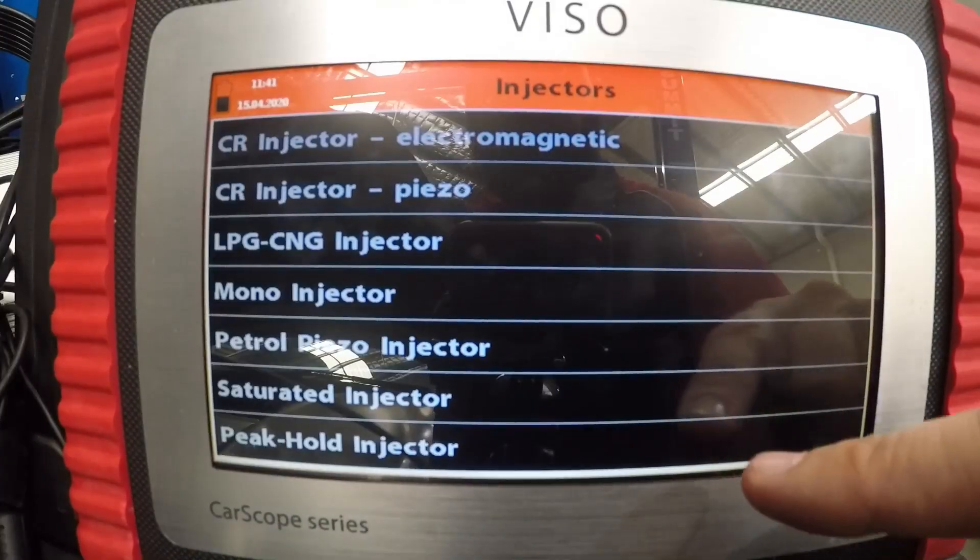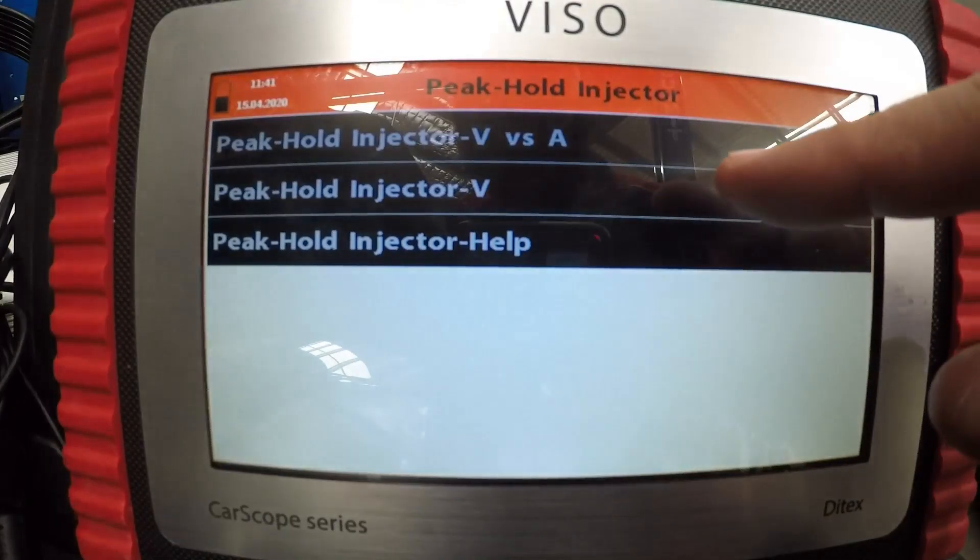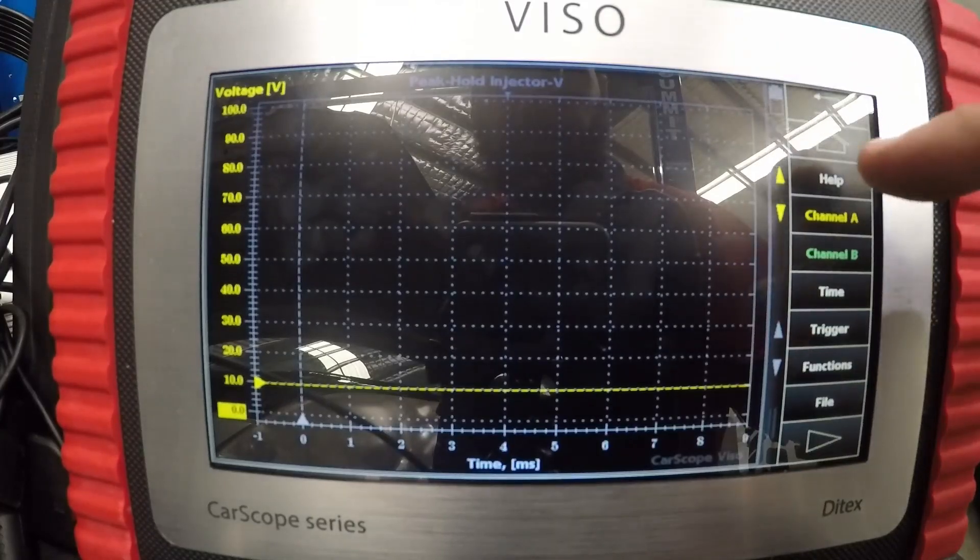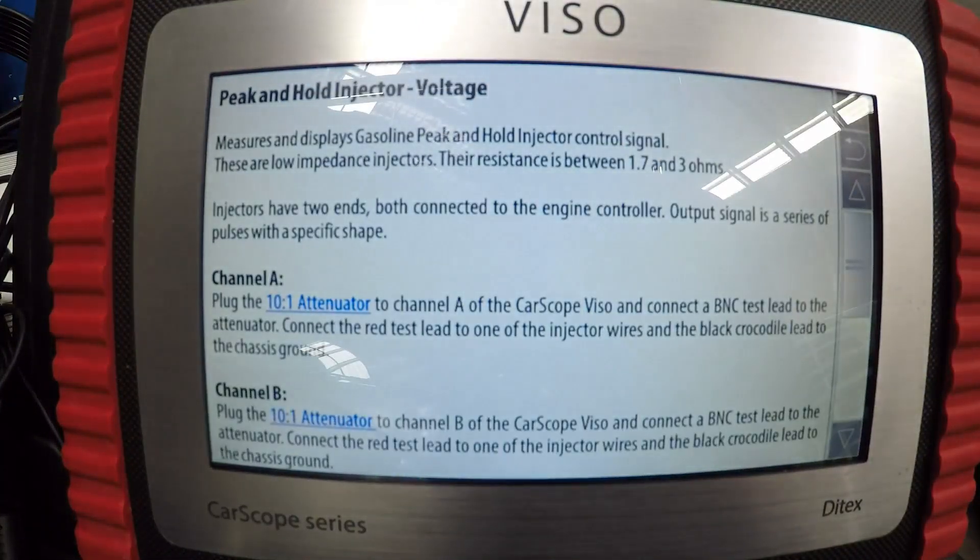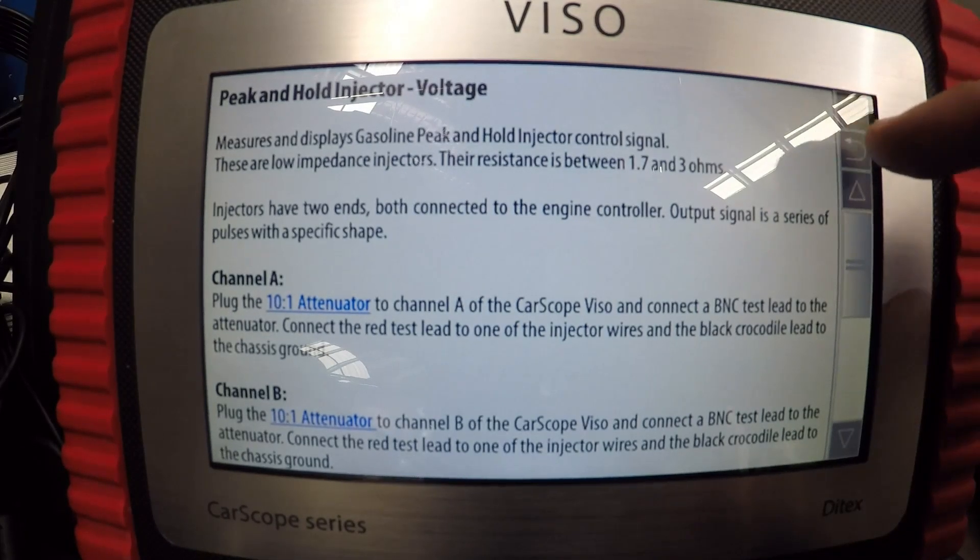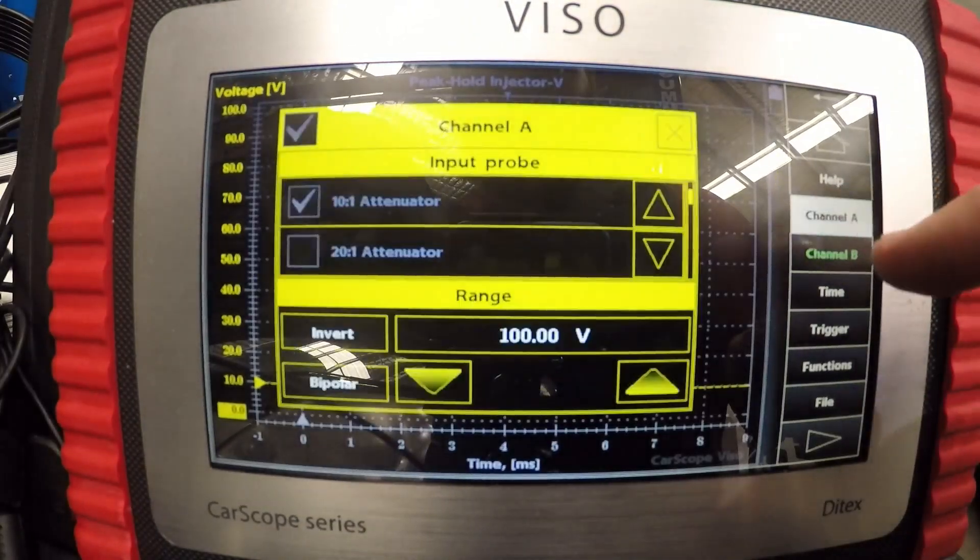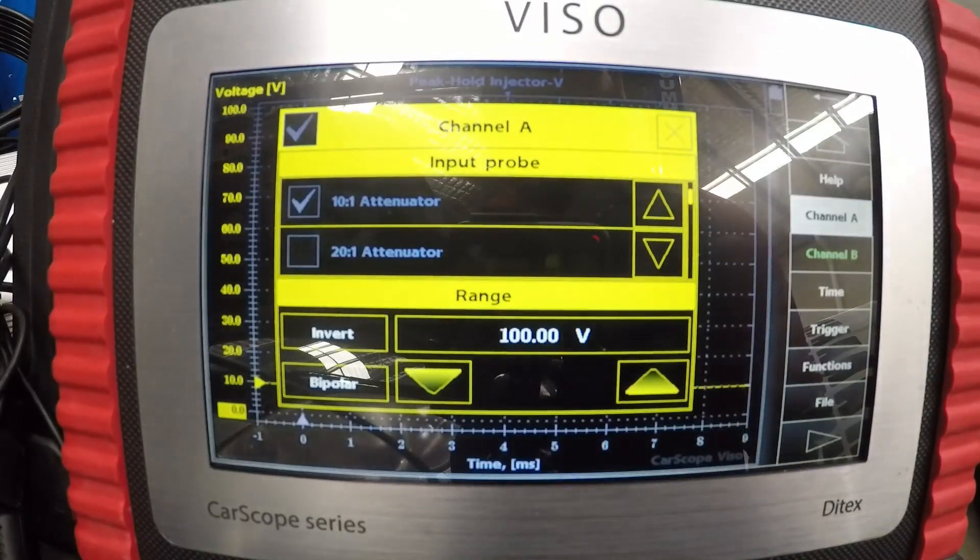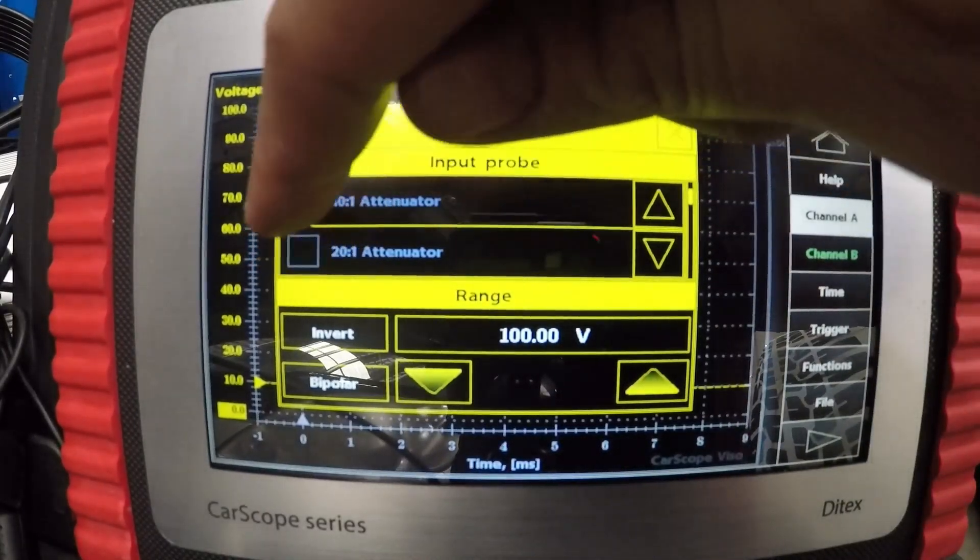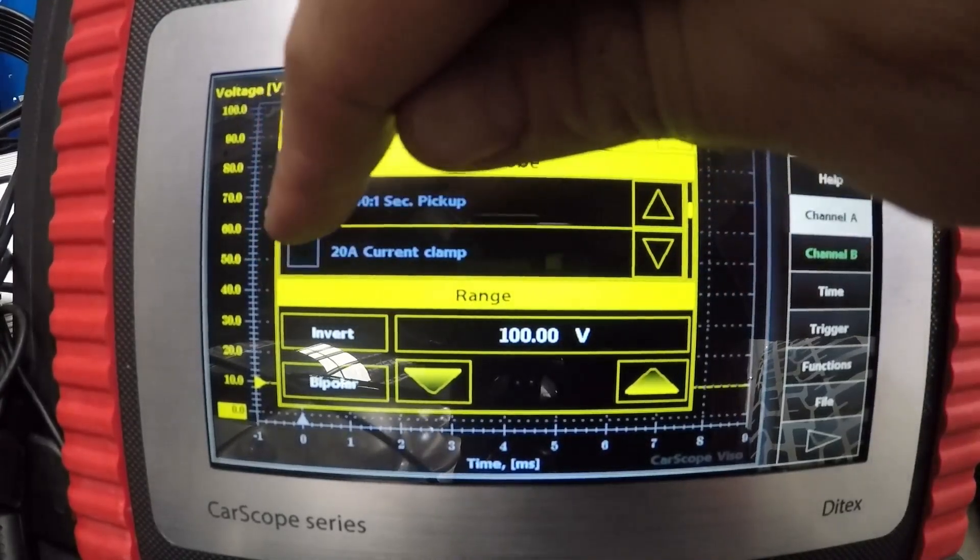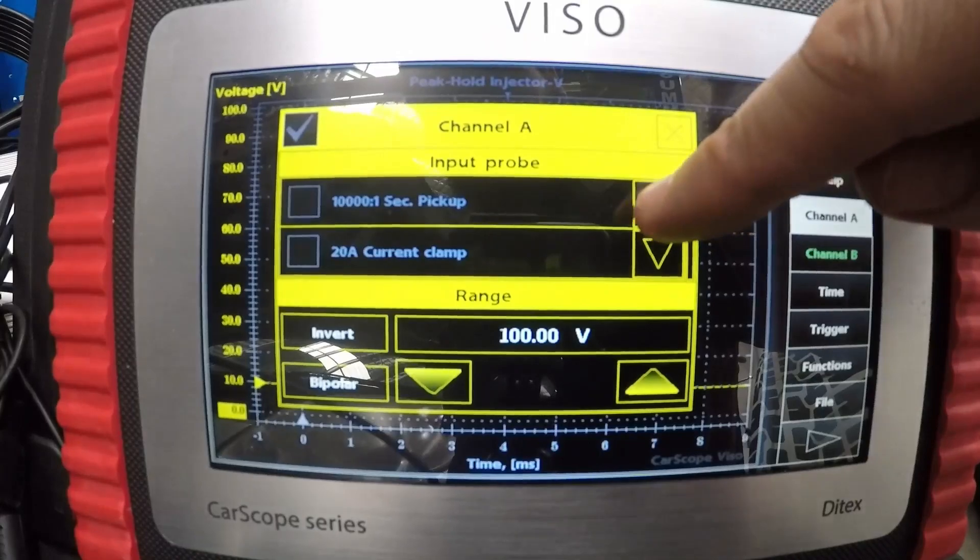All right, let's go for a peak hold injector type test. Peak hold injector voltage. So let's go to help. We know that it tells us to put a 10 to 1 attenuator. Now what I don't like about this is you don't seem to be able to change it because I don't have a 10 to 1, I've only got a 20 to 1. So I don't think you can actually change that in the preset. I'm trying, I'm trying everything to change it but it's not working.